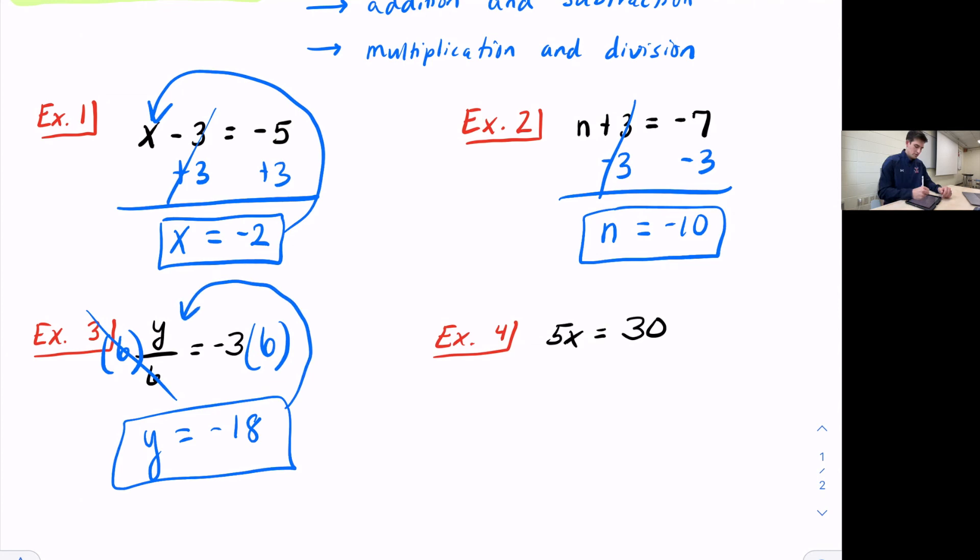And we can substitute that back in. Remember to check. So negative 18 divided by six is, in fact, negative three. So we're good.